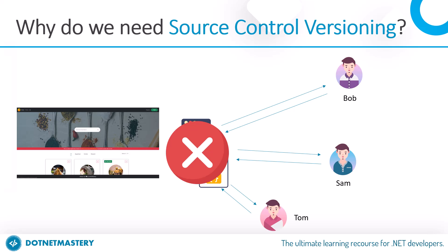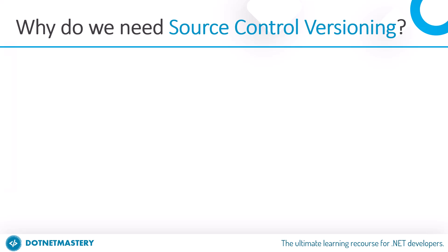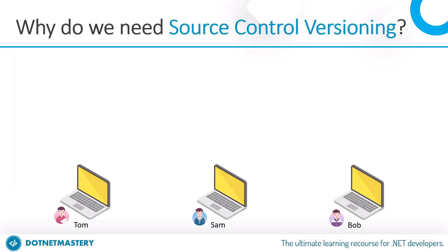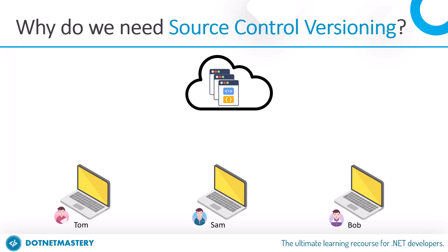In order to solve all these problems, we have a version controlling system. With three developers — Tom, Sam, and Bob — the project files will be hosted on a cloud server. All developers install git on their local machines, and the cloud server itself maintains a history. Whoever commits anything, the cloud server tracks it and stores the full history, solving the first problem. When the initial files are added to the cloud server, that becomes version one of the project.